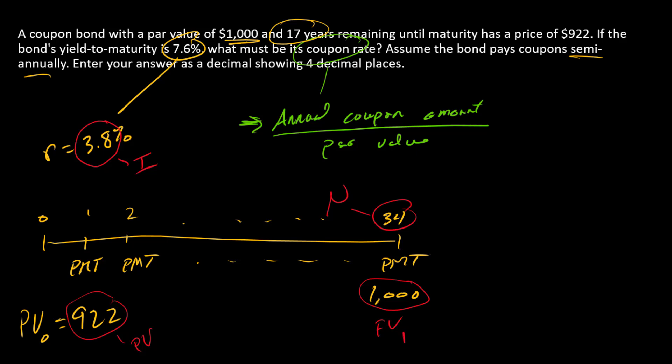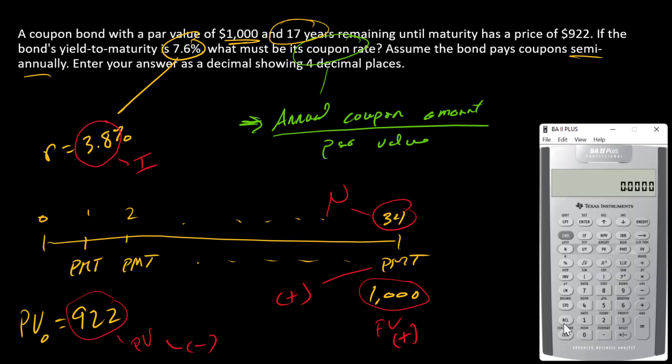Let's check our signs now. Let's think about this from the perspective of the bond investor. The par repayment is going to be positive, as is the payment that we solve for. The PV would be something that the investor pays for the bond and so that will be a negative number.